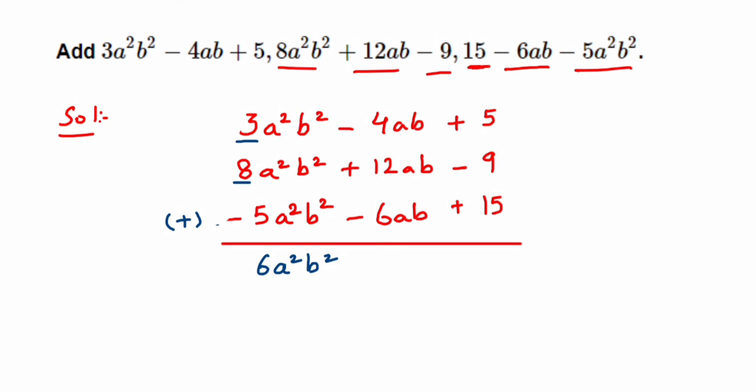In the next one, we have -4 + 12 - 6. -4 + 12 will give us 8, then 8 - 6 will be 2, so we get +2ab.